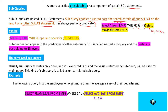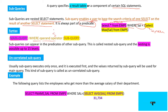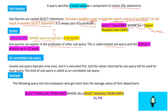For syntax, we first write the main query, then the predicate with the WHERE clause, followed by an operand and operator — the operator can be equal to, less than, or greater than — and then we write the subquery. A subquery can appear in the predicate of another subquery; this is called a nested subquery, and nesting is possible up to 15 levels. An uncorrelated subquery usually executes only once and is executed first.